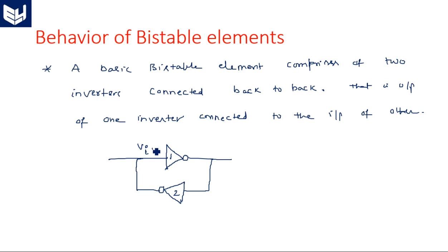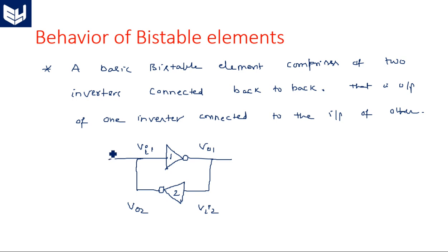V1 is the input of the first inverter, and the output of this inverter serves as the input of the second inverter. To understand the behavior: whenever a logic 1 is applied, it passes through the first inverter and gives 0. That 0 is fed back to the inverter and produces a 1 again. So logic 1, 0, 1, 0 — it continuously rotates in this back-to-back connected bistable element.